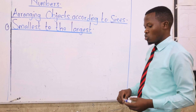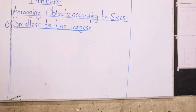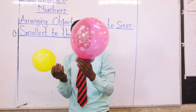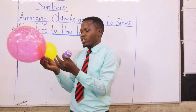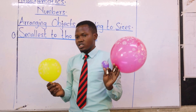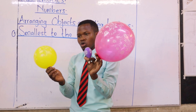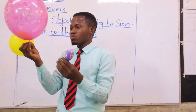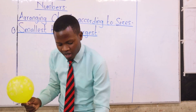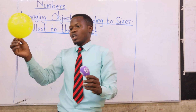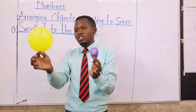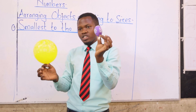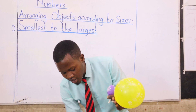So I have some items here. I have three balloons — how many balloons? Three. If you look at them, they are not the same sizes. Now look at the red balloon — is it small or big? Now I have two balloons here: the yellow one and the purple one. Which one is the biggest among these two? The yellow one. And this one here is the smallest balloon.